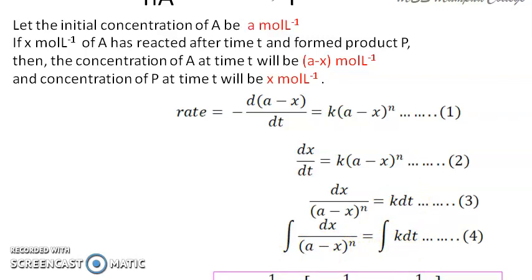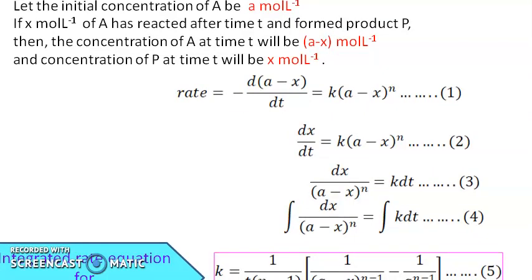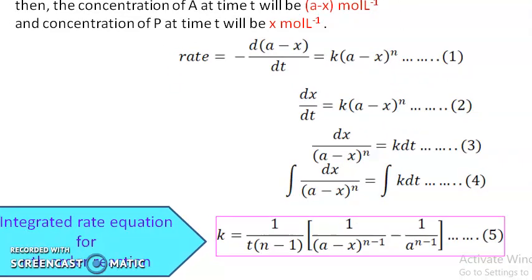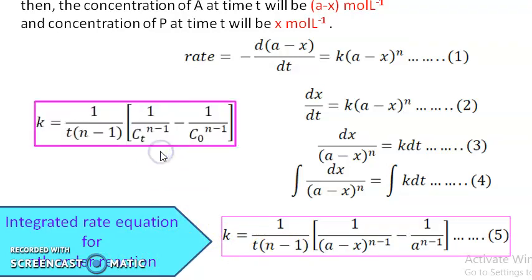On integrating equation 3, we get equation 5, which is the integrated rate equation for the nth order reaction: K = 1/T · 1/(N−1) · [1/(A−X)^(N−1) − 1/A^(N−1)]. This can be rewritten as K = 1/T · 1/(N−1) · [1/CT^(N−1) − 1/C0^(N−1)], where CT is the concentration at time T (equal to A−X) and C0 is the initial concentration (equal to A).